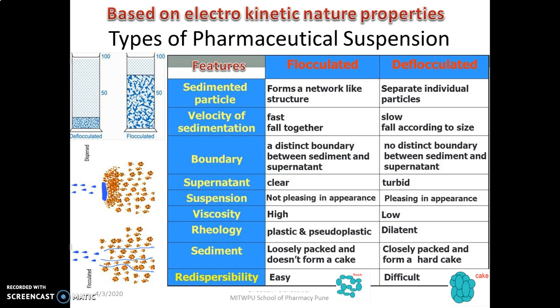In case of deflocculated suspension, the sedimentation rate — velocity of sedimentation — is very, very slow. The particles fall according to size, and we have to optimize the flocculation process by adjusting the density and viscosity of the suspension. The sedimentation rate is very slow because we want to maintain the particles in that dispersed system for longer times. But once it forms a cake, it will be difficult to re-disperse — that's the drawback of this system.